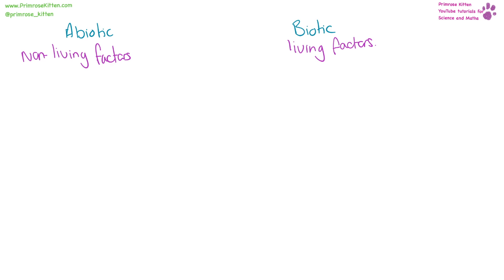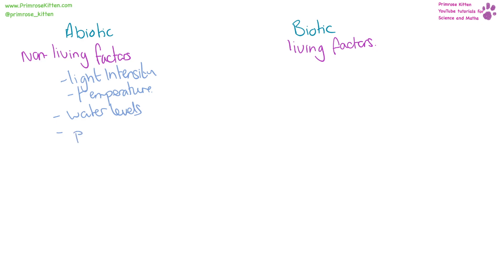Abiotic and biotic factors are things that are going to affect any organism. Abiotic are non-living factors, such as light intensity, temperature, water levels, pH, iron levels, wind, carbon dioxide levels, and oxygen levels.